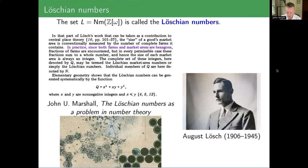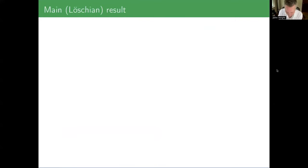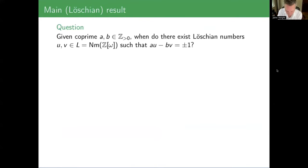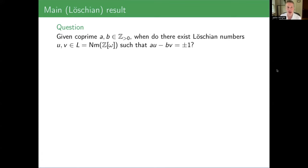So just to make sure we're all still on the same page: the question I'm asking is, given co-prime positive integers A and B, when are there Loeschian numbers — norms from Eisenstein integers — that are the coefficients of the Bézout identity? That is, AU minus BV equals plus or minus one, with U and V both Loeschian numbers.